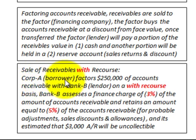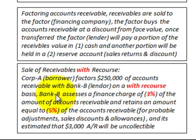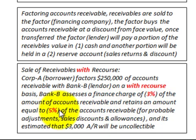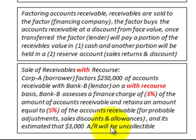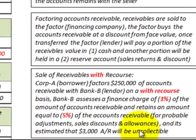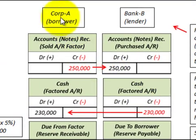In our example, Corporation A factors $250,000 of accounts receivable with Bank B on a with-recourse basis. Bank B assesses a finance charge of 3% of the accounts receivable and retains an amount equal to 5% of the accounts receivable for probable adjustments for sales discounts and allowances. It is estimated that $3,000 of these accounts receivable will be uncollectible.